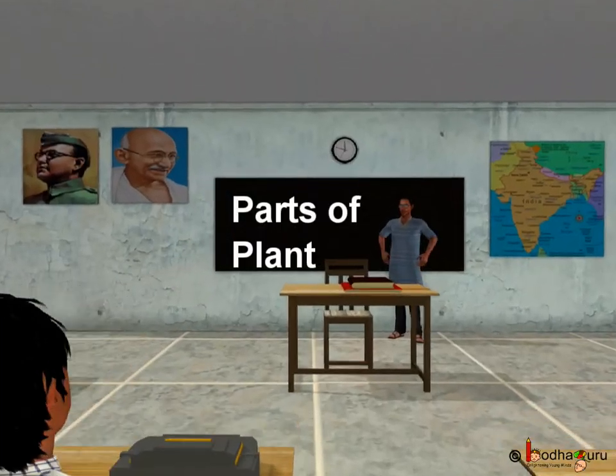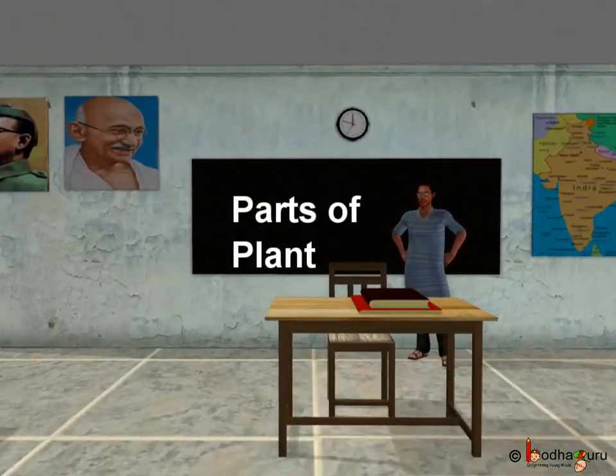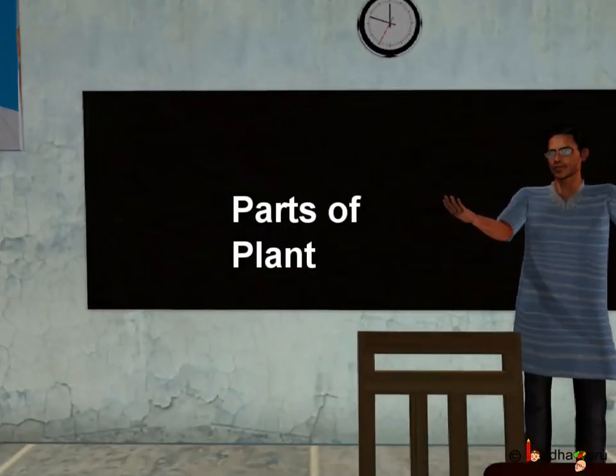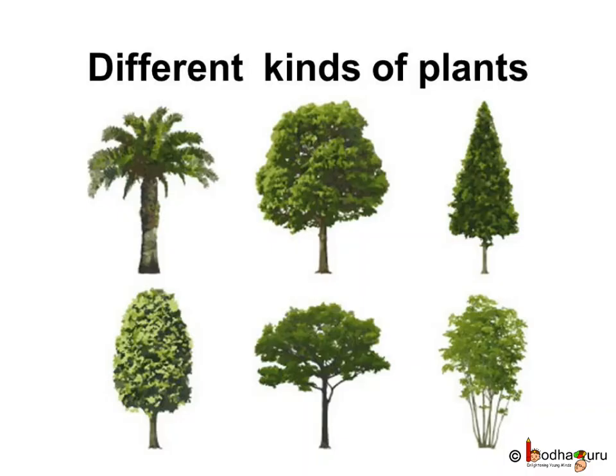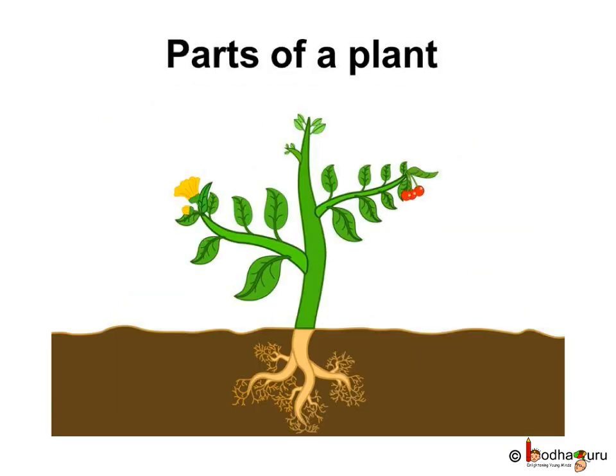We see different types of plants around us. Some are big and some are small. But have you ever noticed that all plants, either big or small, thin or fat, share a similar structure? Today we will learn about different parts of a plant and why each part is important to the plant.